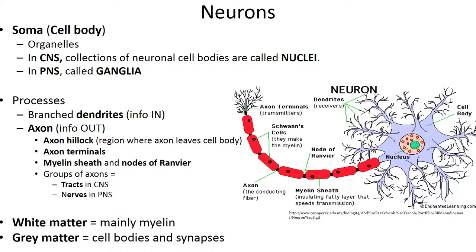Dendrites are neuron processes which possess a large surface area due to numerous branches. They receive chemical stimuli as well as electrical signals toward the cell body. These electrical signals are not nerve impulses — they are called graded potentials, which we will talk about later. The axon is capable of generating action potentials and transmitting nerve impulses away from the cell body during axoplasmic transport. When the signal travels from the axon terminals back toward the cell body, it is called retrograde flow.